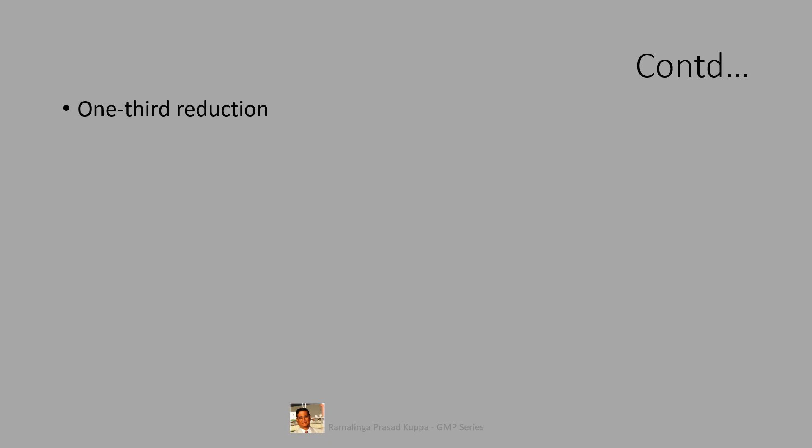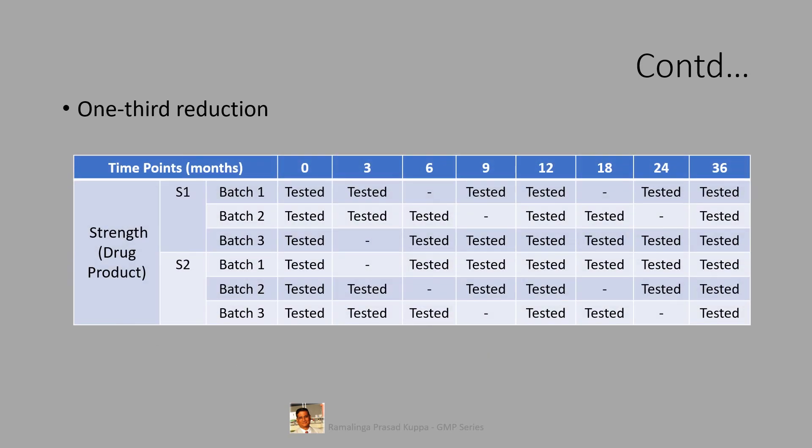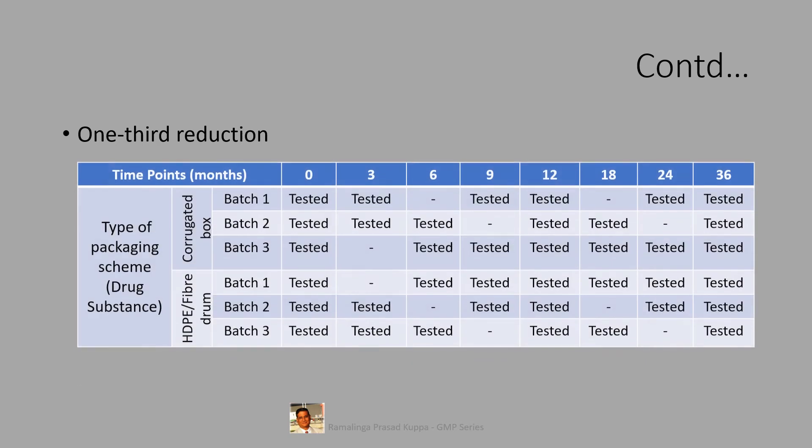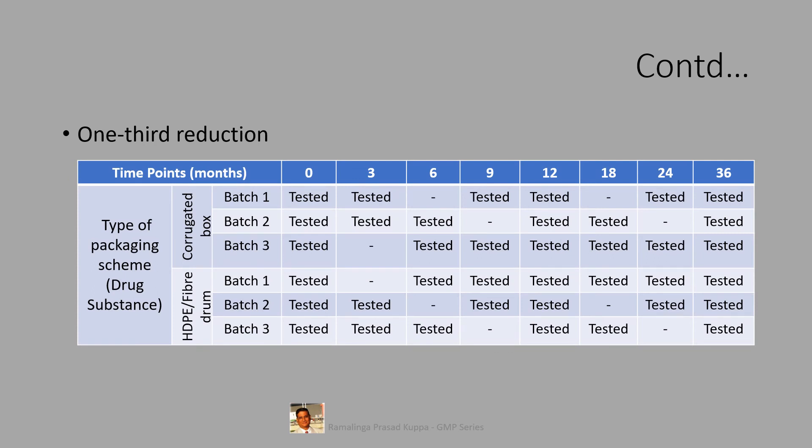Let us see the example for one third reduction for drug product. One third reduction is eliminating two out of six samples. So only four are tested. The example describes the design for drug products like this. Here also you can see it is only four. One, two, three, and four. Only four samples. The remaining testing strategy is same as described above. This example is for one third reduction for APIs. This is similar to the one half reduction design with four samples tested with the same strategy as described above.